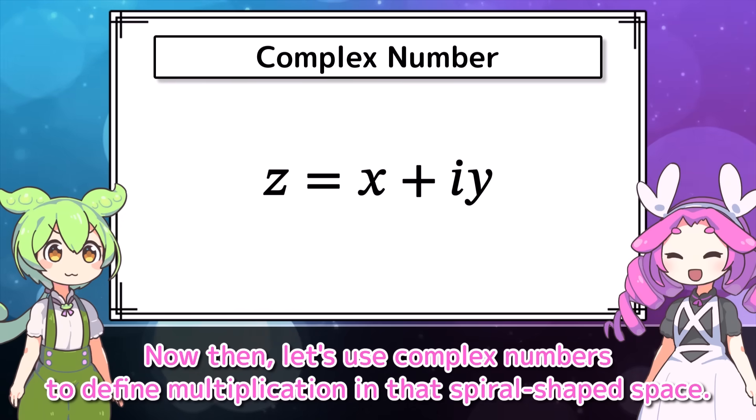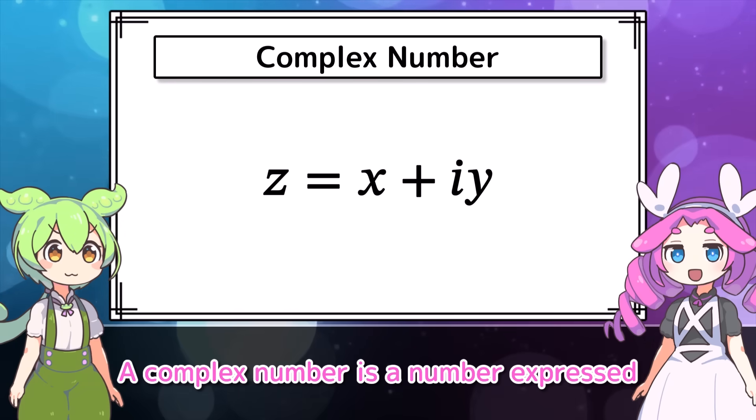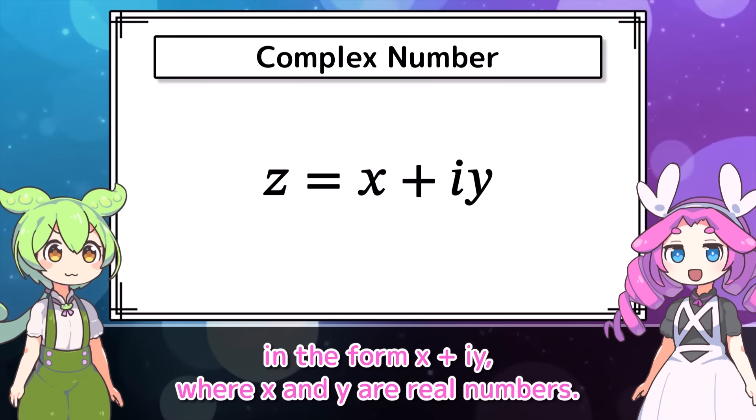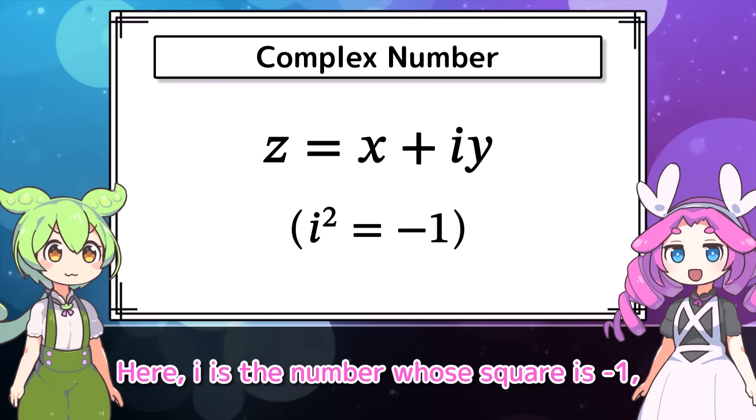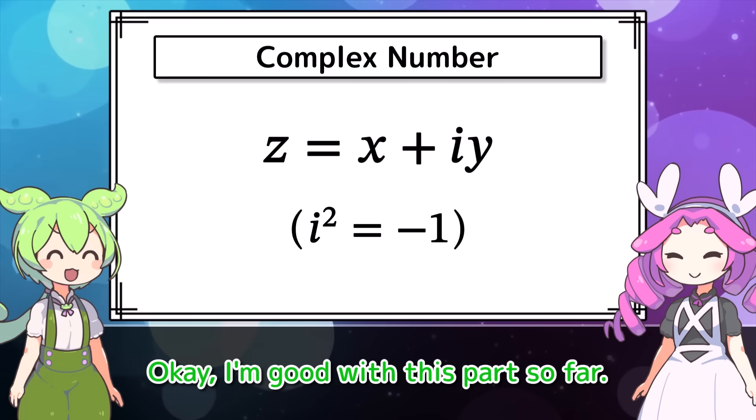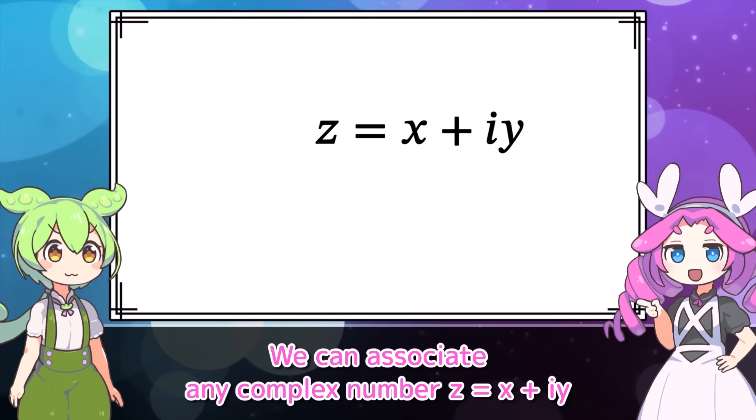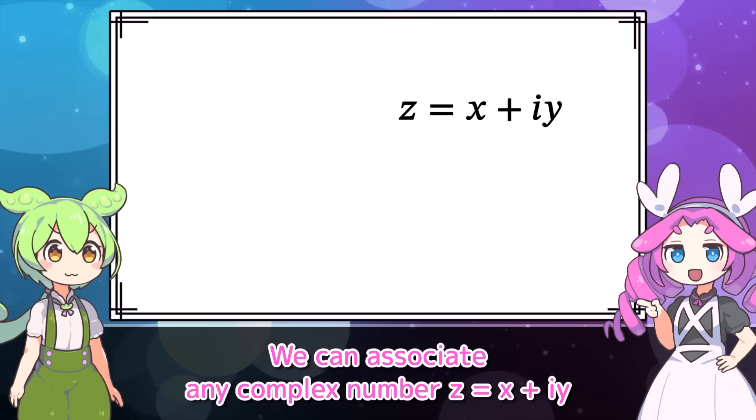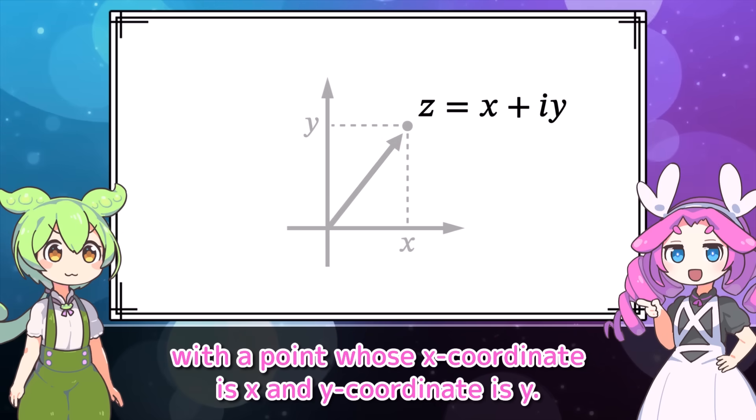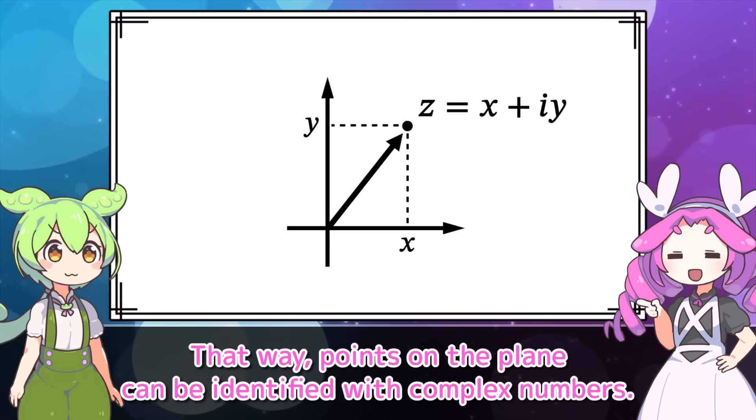This means in spiral-shaped space, addition can't be naturally defined. Not being able to add, that's too great a sacrifice. You're right. It is a big sacrifice. But there's something else we can do instead of addition. And that is... What is it? Multiplication. Multiplication? Sounds harder than addition.